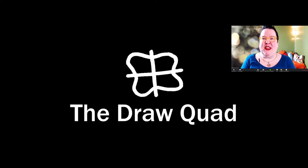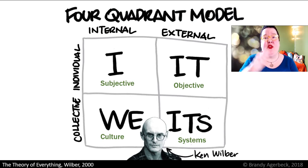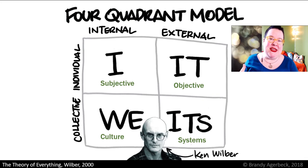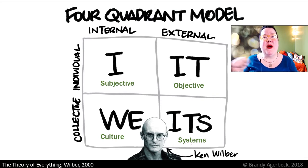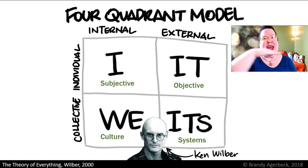On the left side of the model, you see what's internal. On the right side, you see what's external. The top half of the model is the individual experience, and the bottom half is the shared, collective experience. So with this model you see these four corners. I'm going to touch this lightly right now, and we'll go into how I adapted his model and added a layer on top about drawing specifically.